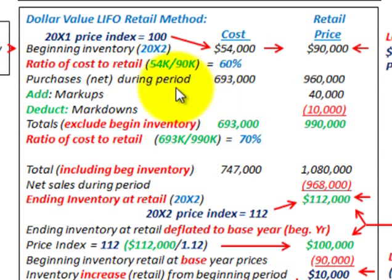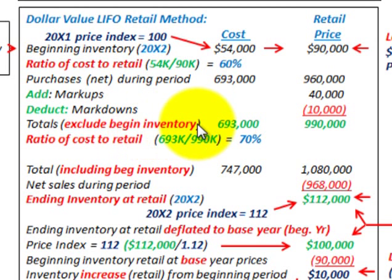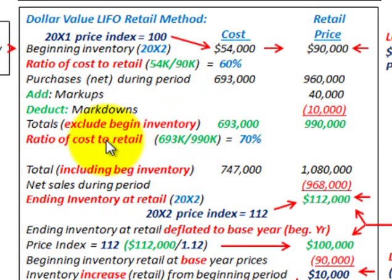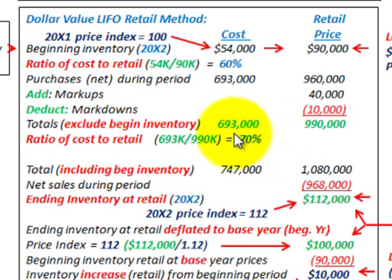Looking at our current period, we have purchases for the period with some markups or markdowns. Our totals here exclude the beginning inventory. For cost, we have $693,000 for the period, and at retail our total would be $990,000 netting out these amounts. So our cost-to-retail ratio would be the $693,000 cost divided by the retail amount of $990,000, giving us a cost-to-retail ratio of 70%.